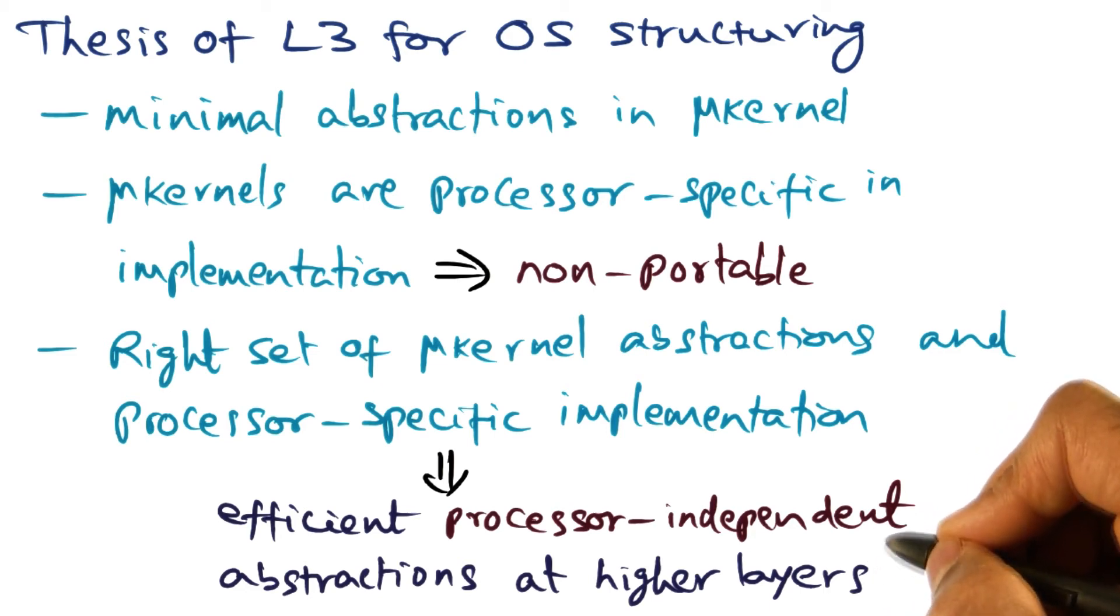All of the services that we associate with a monolithic kernel, like a Unix operating system - such as file system, network protocols, scheduling, and memory management -